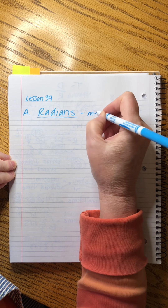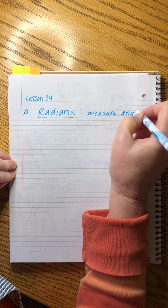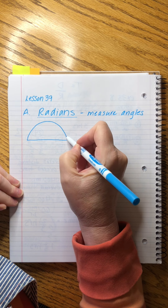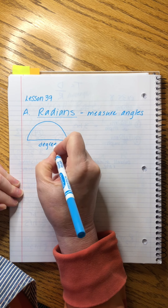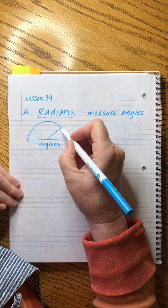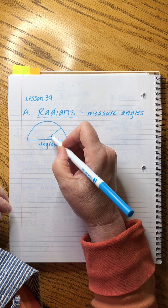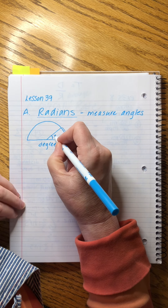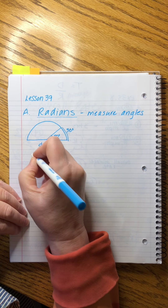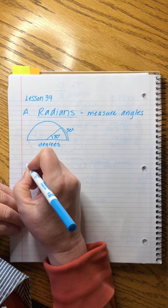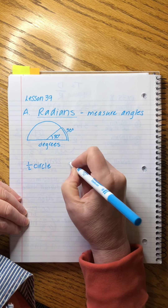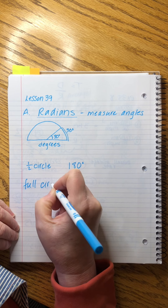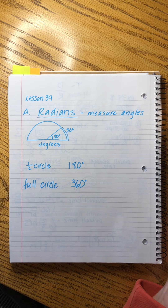Radians are another way to measure angles — it's a unit of measure. Up until now, we've talked about measuring angles in terms of degrees. When we measure an angle, we know that a 30-degree angle here matches a 30-degree angle there. In a half circle, a semicircle, there are 180 degrees, and in a full circle there are 360 degrees. That is easy, comfortable, and familiar.